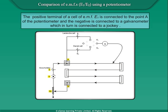The positive terminal of a cell of EMF E1 is connected to point A of the potentiometer and the negative is connected to a galvanometer, which in turn is connected to a jockey.